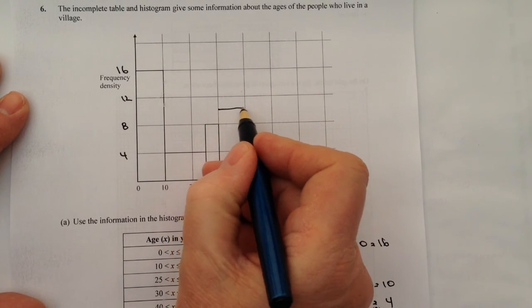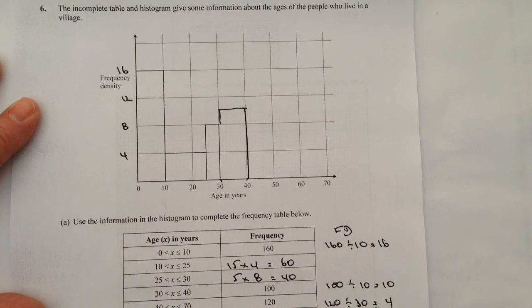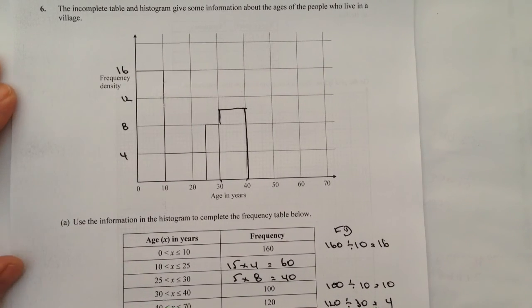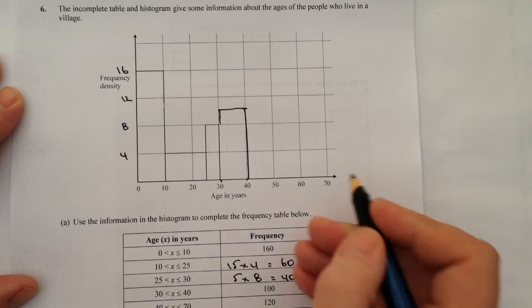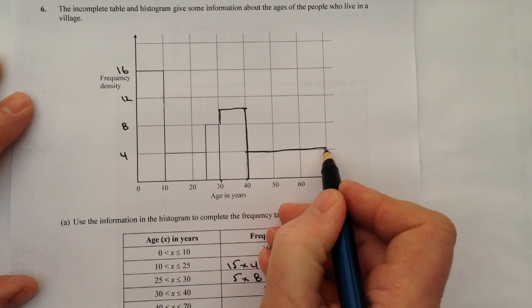So it's going to be about here, just between the 8 and the 12 there. And then finally, the last one has got a frequency density of 4, and it's also got a class width of 30, between 40 and 70. So 40 to 70, and it's going to give me a frequency density of 4, so it's going to look a little bit like that.